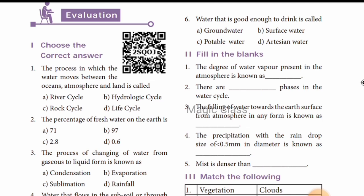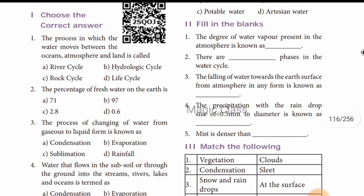Question number 6: water that is good enough to drink. Water that cannot be directly consumed must be filtered through different water treatment processes. Water suitable to drink is called potable water.